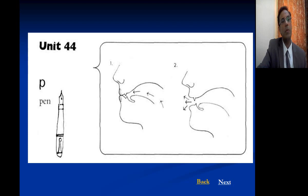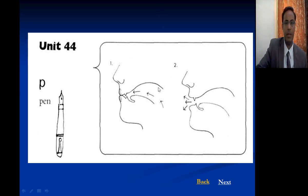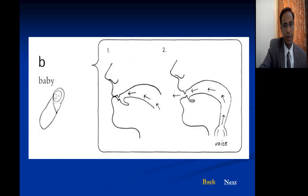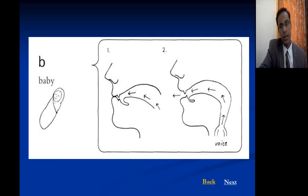The P sound is bilabial stop sound or plosive. The place of articulation is bilabial, the manner of articulation involves complete blockage of the airstream, then it is released suddenly — it is explosive and voiceless. Its voiced counterpart is B — also bilabial, also an explosive or stop sound, but voiced, as in 'baby.'